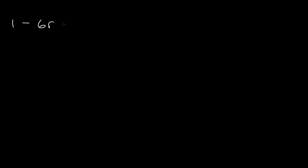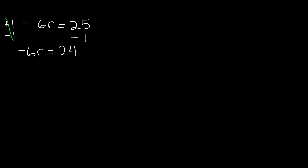Now let's do another equation. We have 1 minus 6r is equal to 25. First, we have to remove all the constants. Our first constant is 1. Since this is positive 1, we have to subtract 1. And remember, the equation has to be equal, so we have to do the same on the other side. Positive 1 and negative 1 cancel each other out, so we're left with negative 6r is equal to 24.